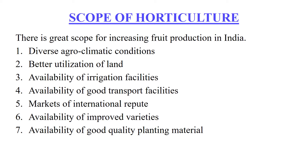The next scope is the availability of irrigation facilities. Many irrigation projects have been constructed and water can be given at the critical stage of growth for better yield and quality of fruits. A number of percolation tanks are being constructed and new irrigation schemes are being implemented efficiently.